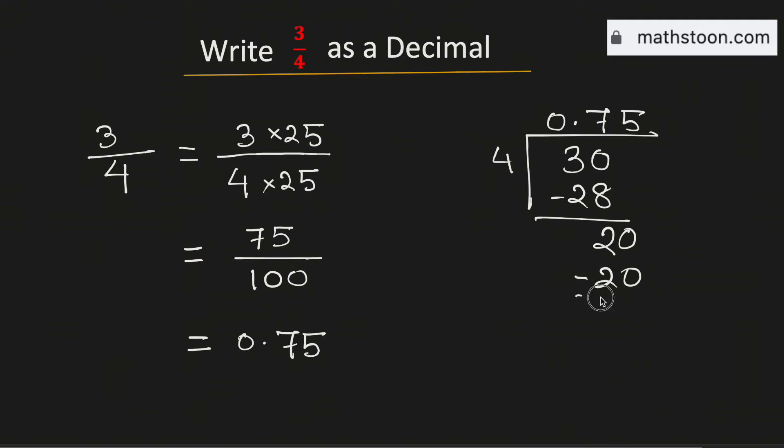Subtracting, we will get 0. Therefore, 3/4 as a decimal is equal to 0.75. So we get the same decimal expression for the fraction 3/4, and this is our final answer. Thank you for watching. Please like, share, and comment on the video. Also, do subscribe to the channel.